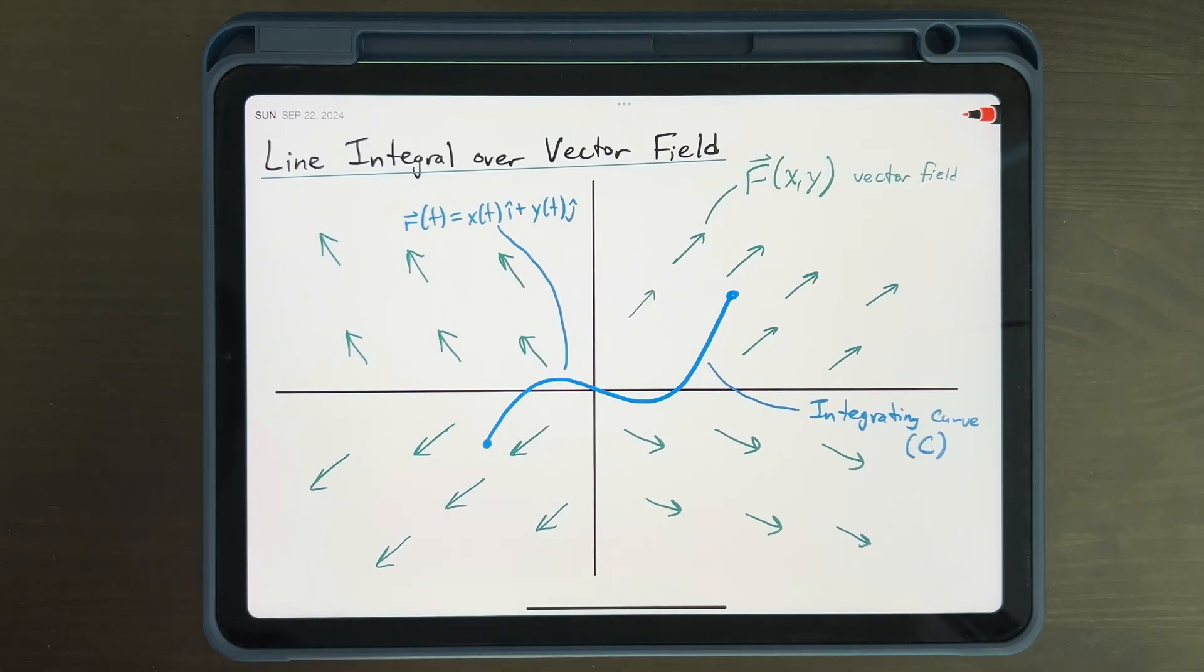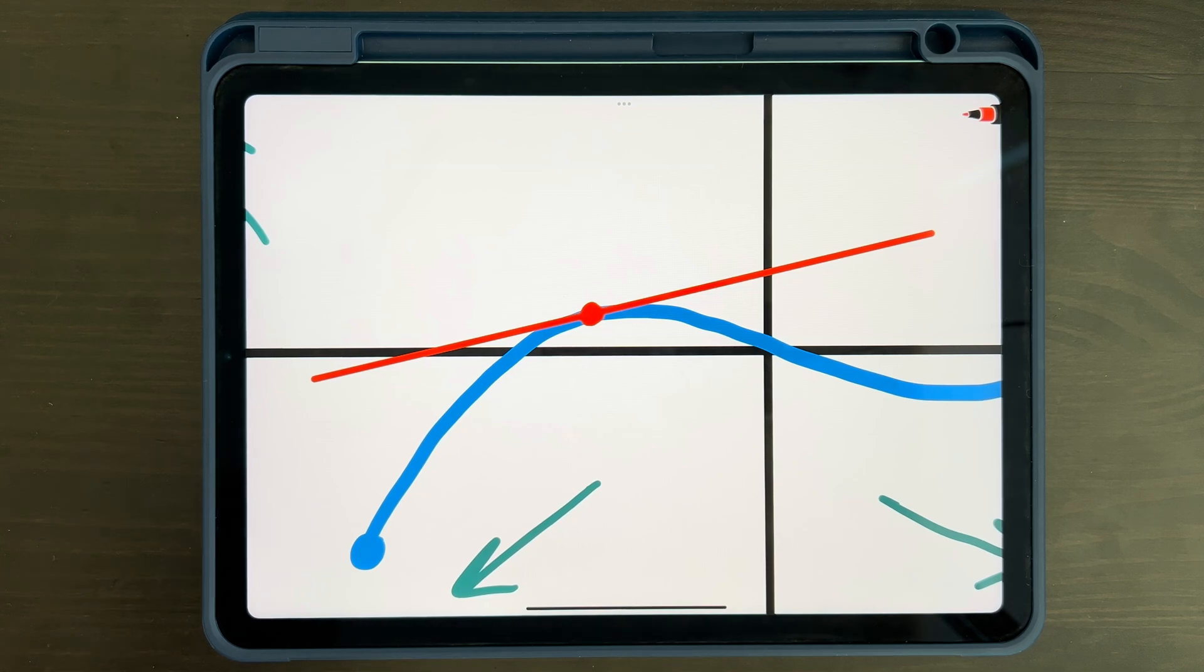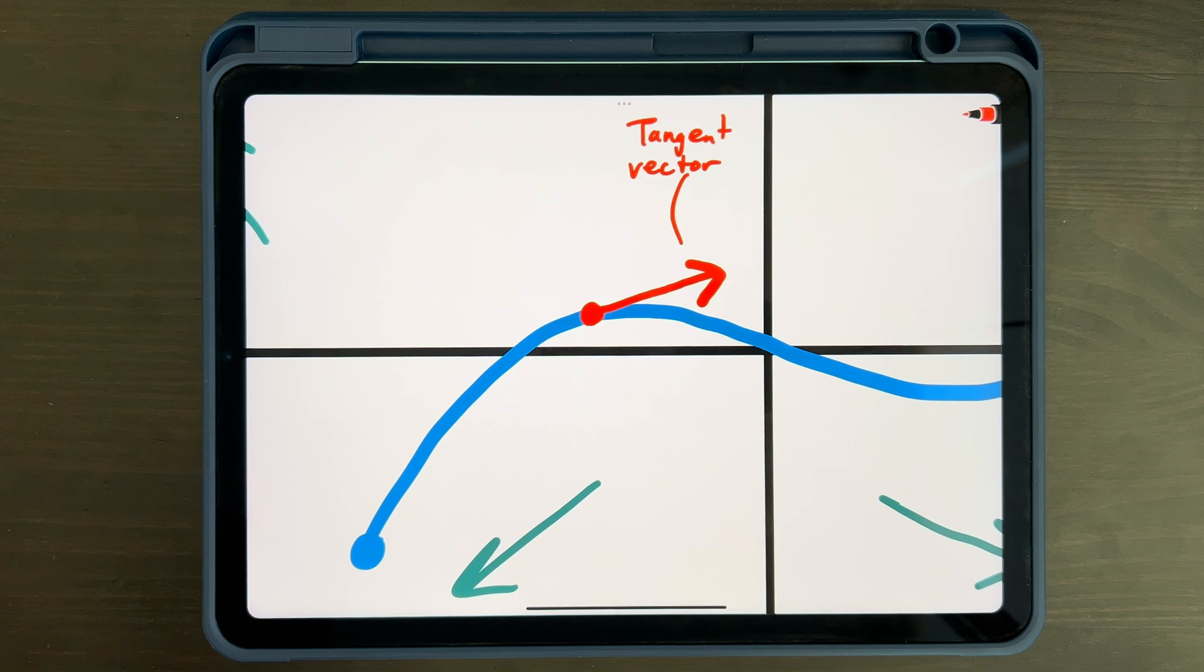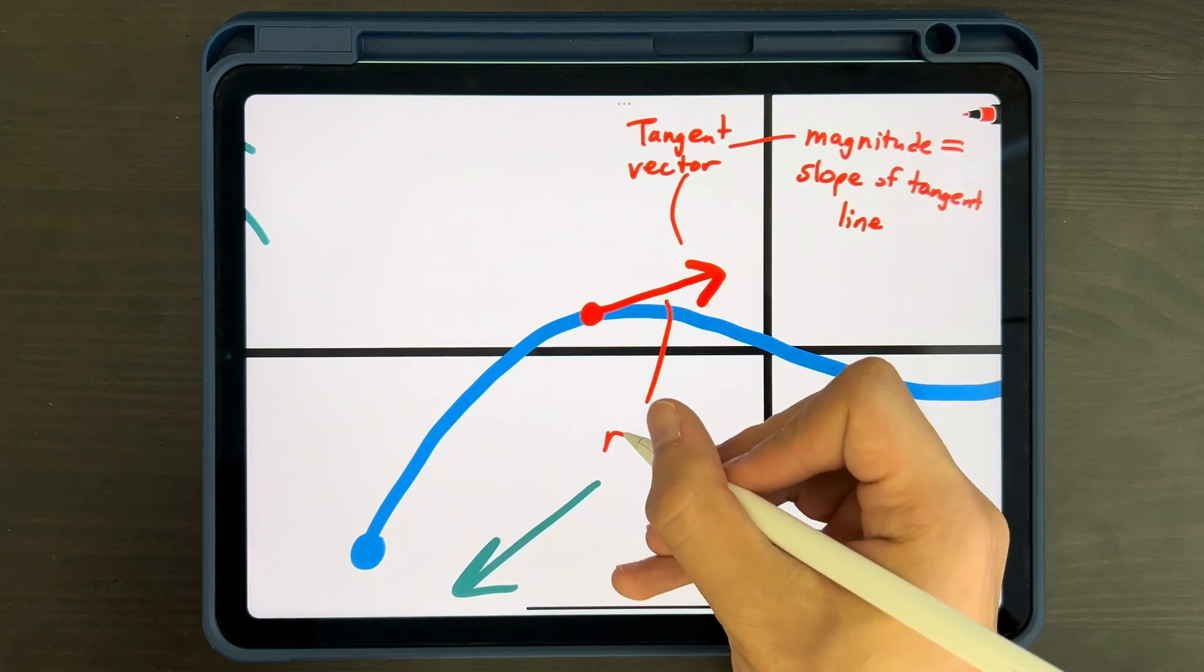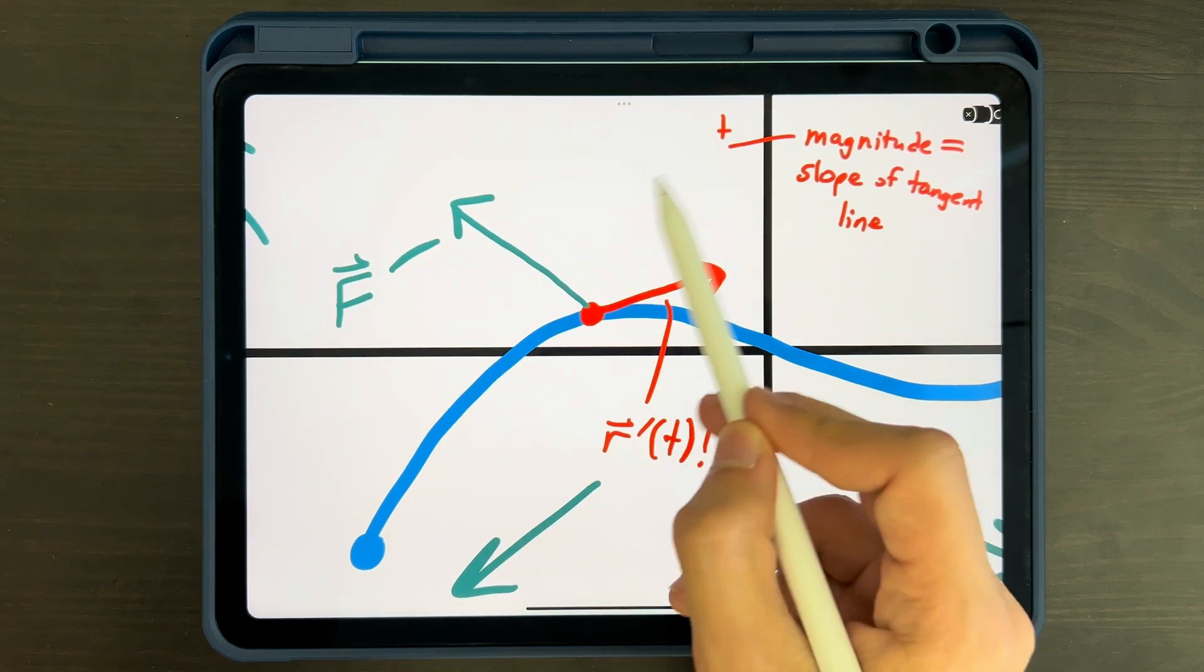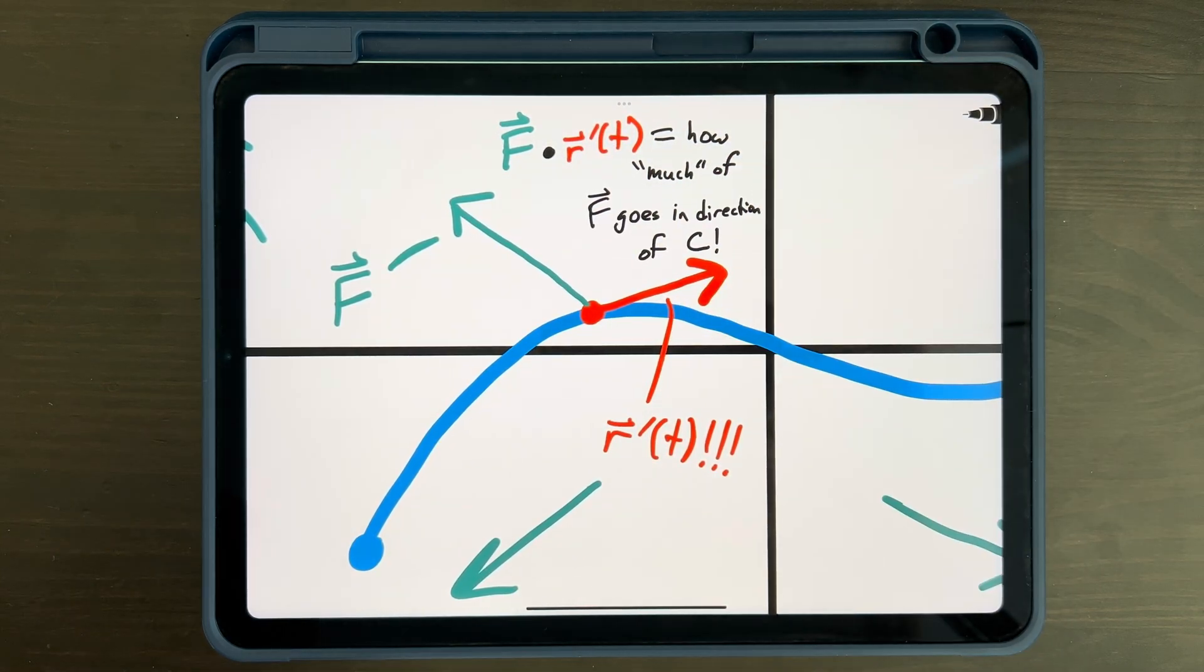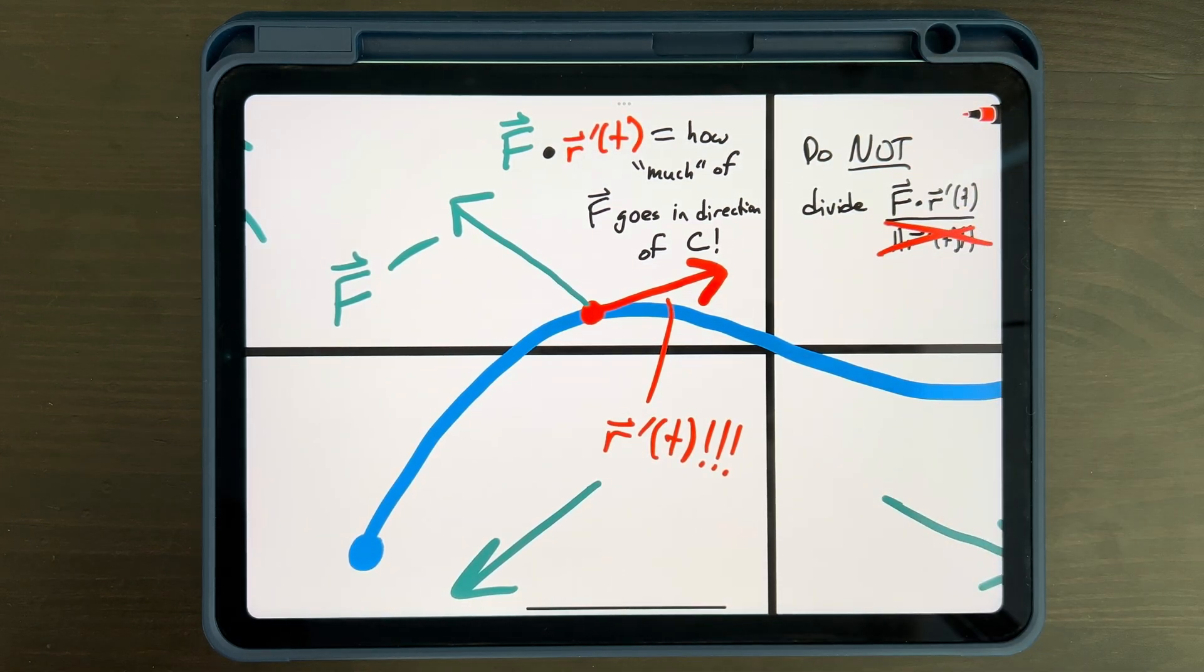Let's go back to our line integral. At every point along our integrating curve, we can draw a tangent line corresponding to the derivative at that point. Alternatively, we can also draw a tangent vector representing the same tangent line, which now also notes the direction of movement of our curve, and its magnitude is equal to the slope of the tangent line. This is actually the derivative of our vector value function. The dot product of our vector field and this tangent derivative tells us how much of our vector field is going in the direction of our integrating curve. And if we add up all of those values, we get the total line integral. And that's why it's also important we don't divide by the magnitude of our tangent vector. Its magnitude tells us the size of the curve's derivative at a given point, and if the derivative is greater, you would want it to contribute a greater amount to our total line integral.